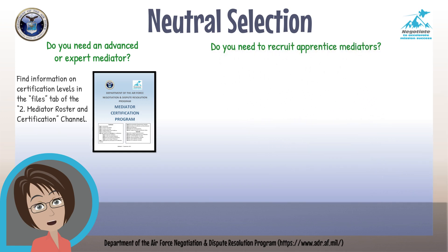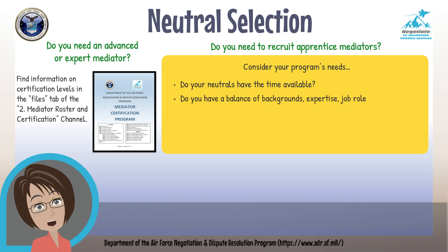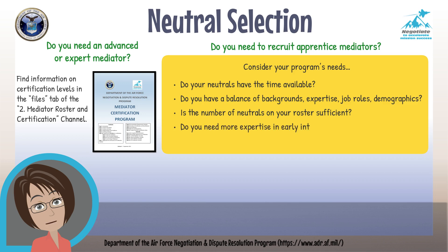As you think about recruiting, consider your program's needs. Do the current neutrals on your roster have the time available for ADR cases? Do you have a balance of backgrounds, types of expertise, job roles, and a good representation of the population you serve? Is the number of neutrals on your roster sufficient? If the number of ADR requests for EO complaints or grievances is low, early intervention is an equally important factor when assessing your program needs. Finally, account for special circumstances, such as conflicts of interest that may prevent some neutrals from mediating certain cases.